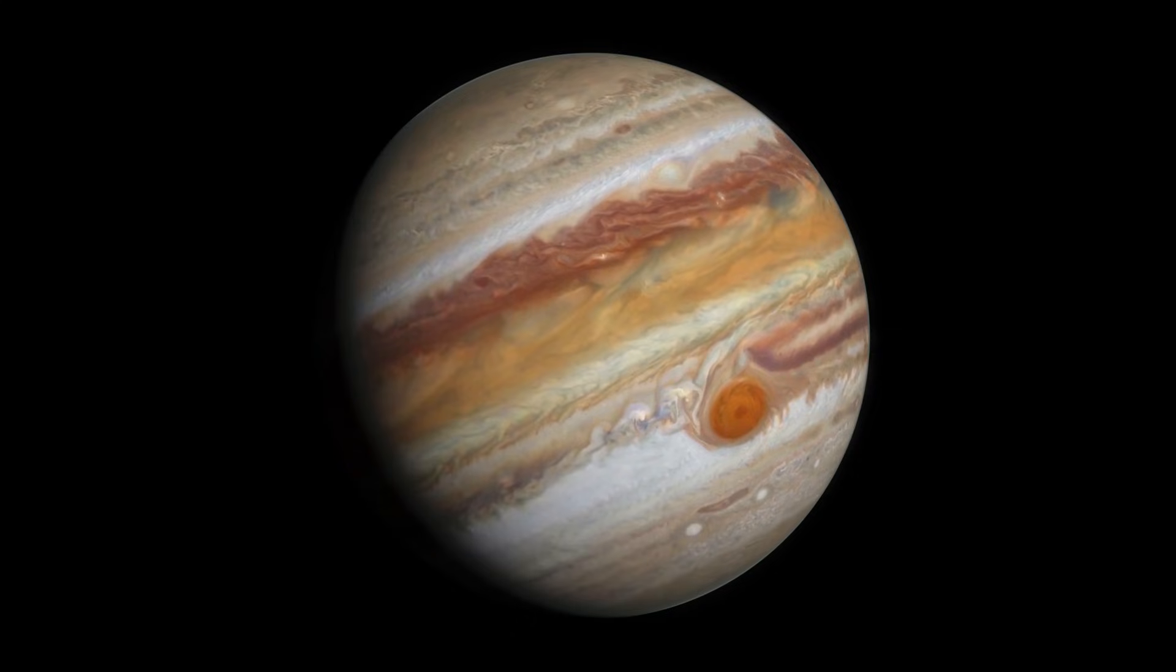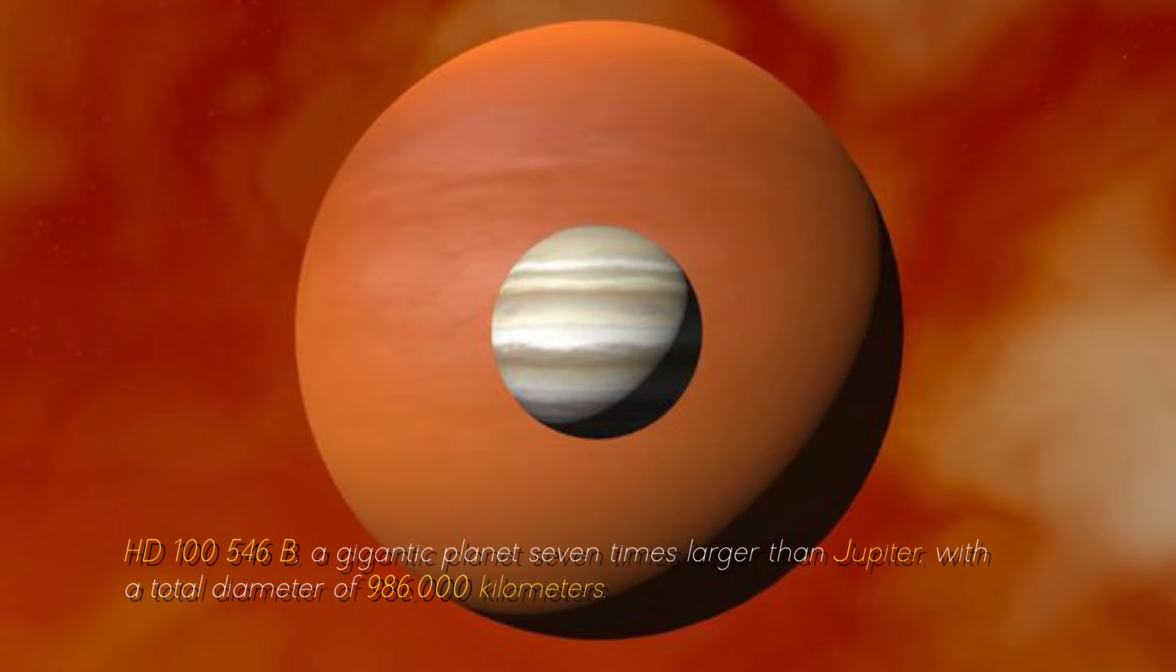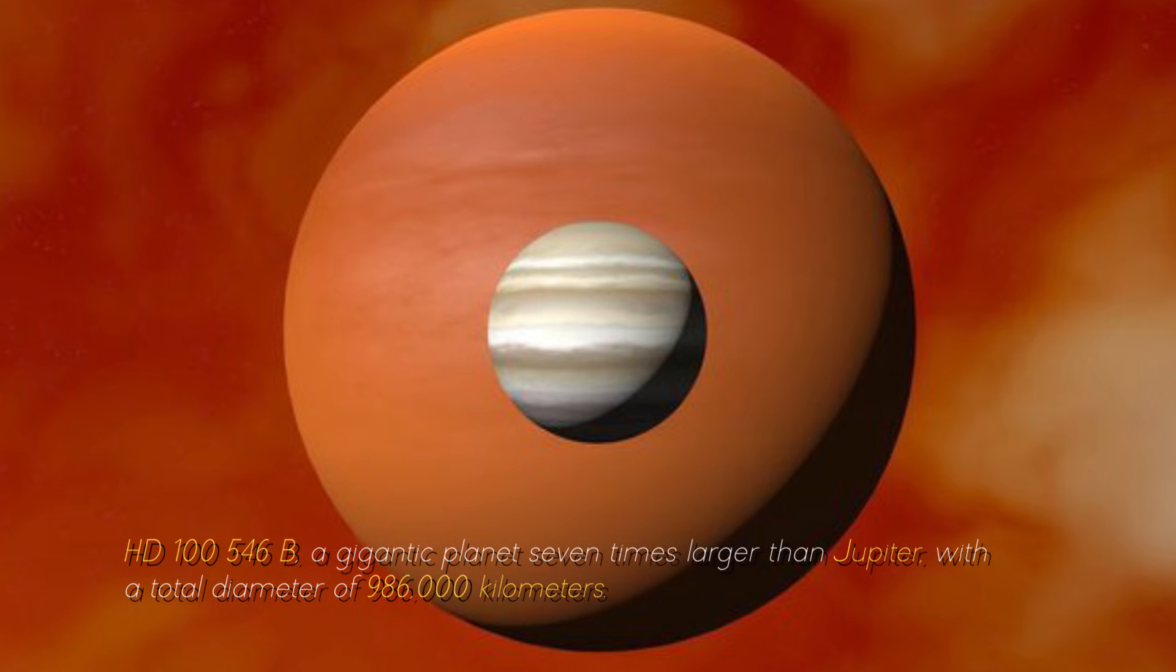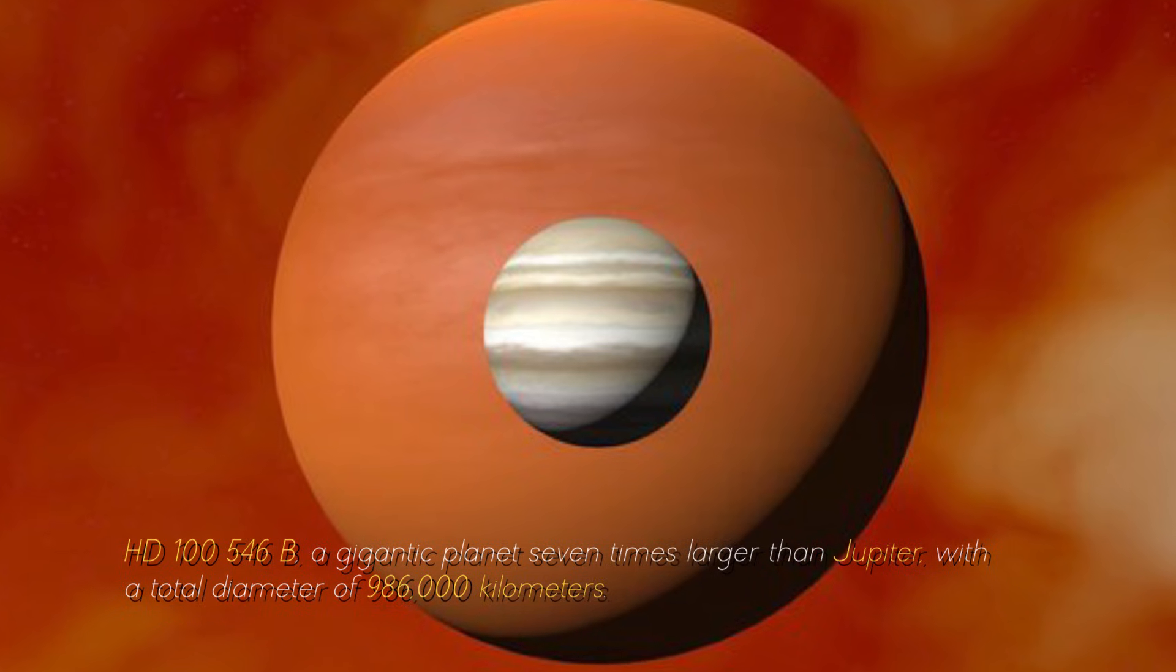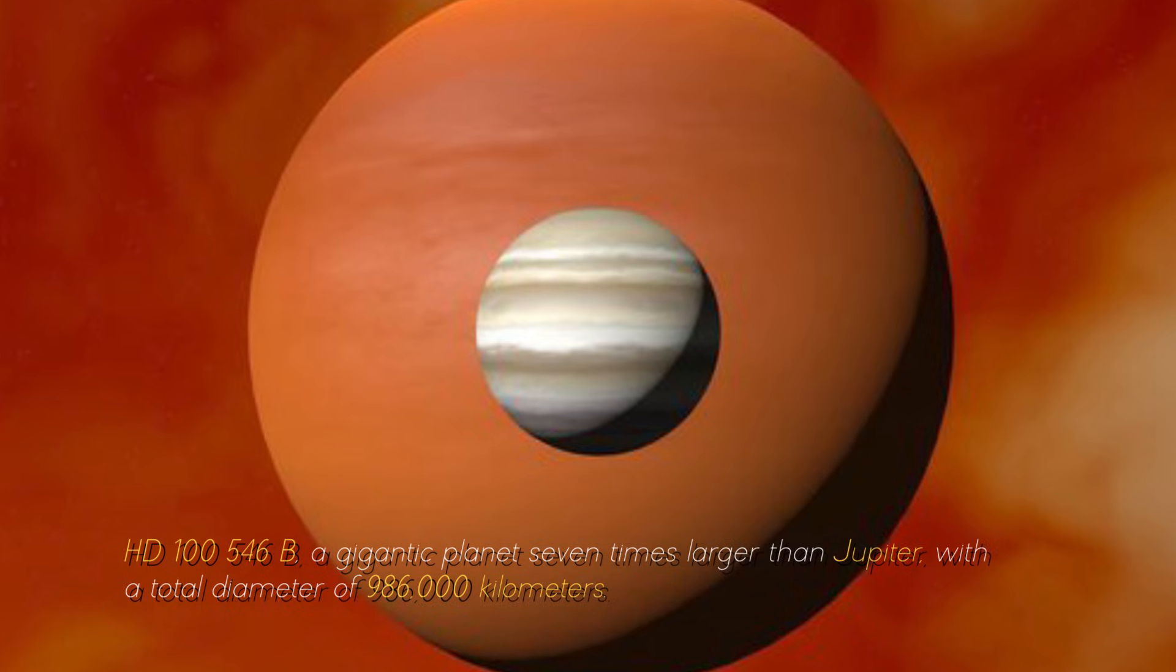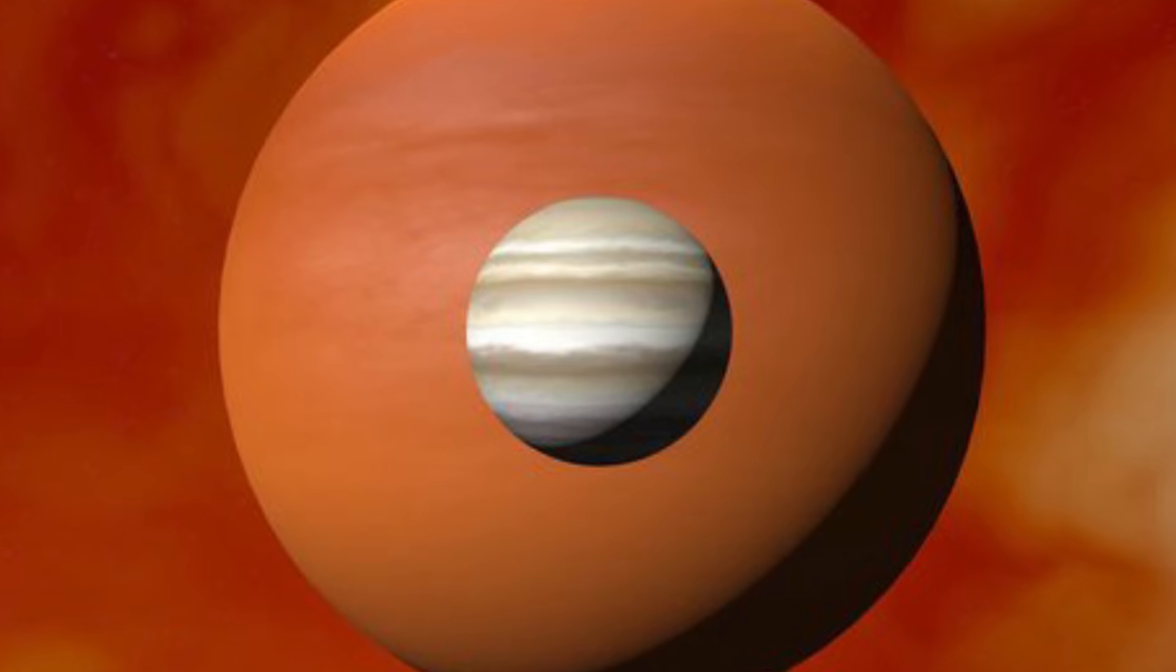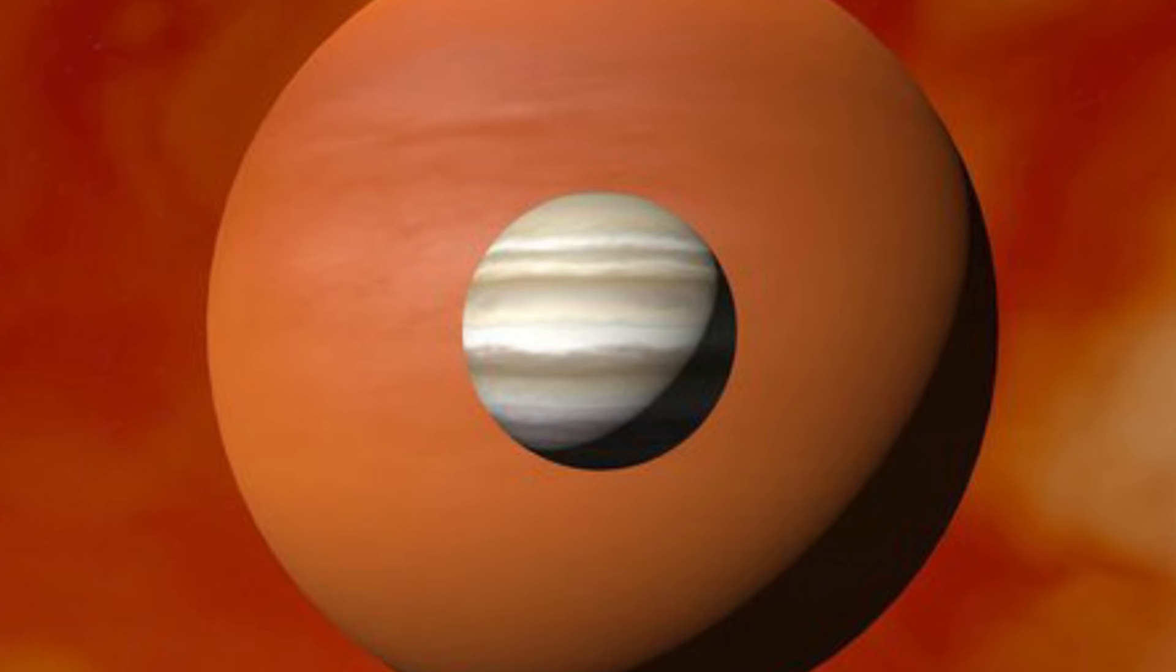Now, let's compare Jupiter with the largest planet in the known universe, HD-10546 b, a gigantic planet seven times larger than Jupiter, with a total diameter of 986,000 kilometers. You can imagine what Earth would look like near this cosmic monster.